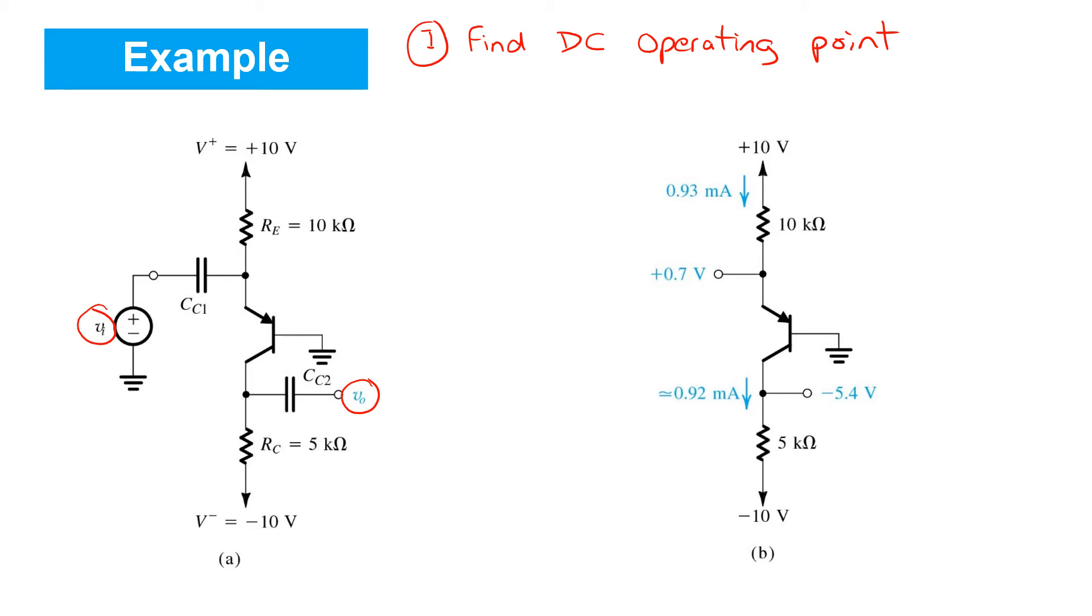You'll see the input is applied to the emitter here and the output taken at the collector. As always, step one in our analysis here will be to find the DC operating point. Now, in order to do so, we can simplify the schematic recognizing that the capacitors will be open circuit at DC. So we need not include them in our DC operating point analysis on the right. We're also going to use a simple constant voltage drop model for the BJT. So in this case, we've got 0.7 volt drop here, establishing an emitter voltage of 0.7 volts. From there, we can find that the voltage drop across this 10k resistor is 9.3 volts. So that gives rise to an emitter current of 0.93 milliamps. We're told that beta is 100 in this example. So alpha is about 0.99.